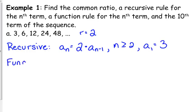Our function rule, or our explicit formula, is a sub n equals the first term, 3, times the common ratio, 2, to the n minus 1.